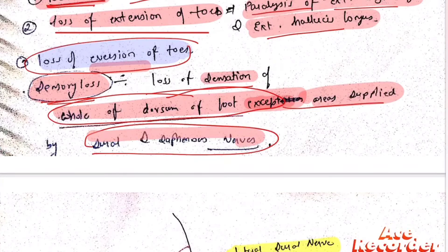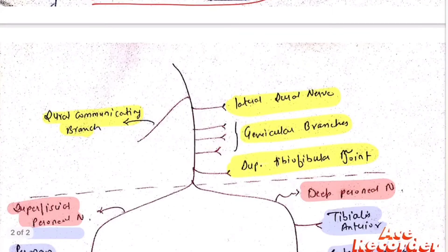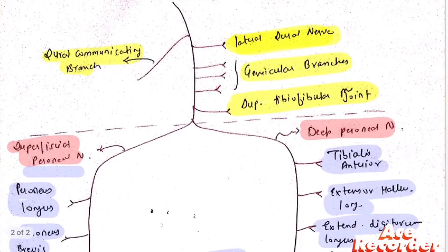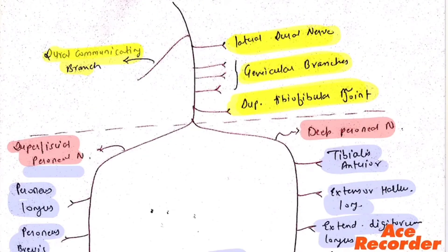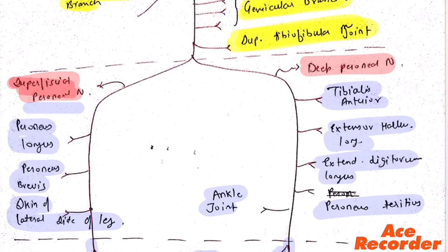This diagram is very important. Make sure to note the lateral sural nerve, genicular branches, superficial tibiofibular joint, and sural communicating branches. As discussed, there are two branches: the superficial peroneal and deep peroneal nerve.